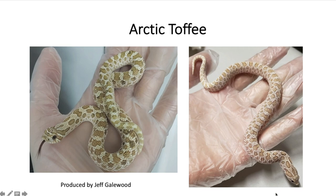You can see the one on the left-hand side and the one on the right-hand side — they look pretty different, but they both have the characteristics of the arctic gene: a big contrast between the pattern and the background, and especially on the left you can see little flakes of that darker pigment around the pattern.